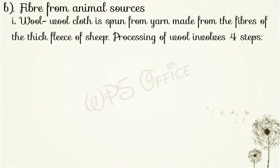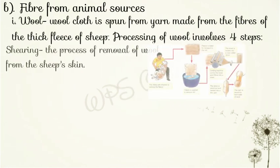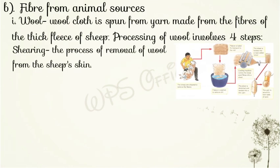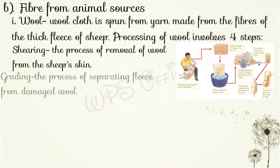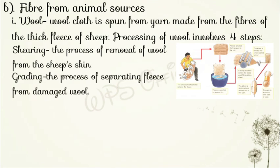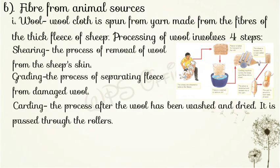Step 1 is shearing: the process of removing wool from the sheep's skin. Step 2 is grading: the process of separating fleas from damaged wool. Step 3 is carding: the process after the wool has been washed and dried, it is passed through rollers and the length of the wool is separated. Step 4 is spinning: the process by which fibers are gathered together and drawn into a long rope, and then twisted to make yarn.